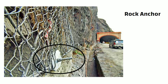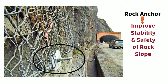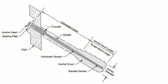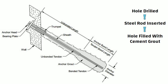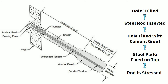The main purpose of rock anchors is to improve the stability and safety of rock slope and avoid its movement. You can see in this picture, a hole is drilled in a rock, a steel rod is inserted in that hole and the hole is filled with cement grout up to a certain depth. A steel plate is fixed on top of that rod and that rod is stressed. This is the process of rock anchoring.